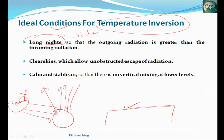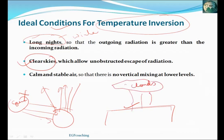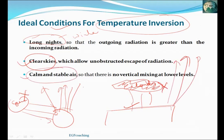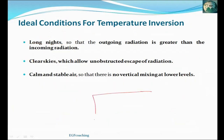A second condition is clear skies. When clouds are present, they trap heat near the surface, preventing inversion. But when skies are clear, all outgoing radiation escapes, cooling the surface. A third condition is calm and stable air — no wind movement also contributes to the development of inversion.